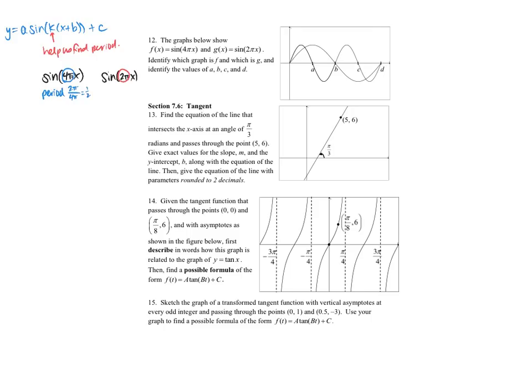And the period of this one is 2 pi over 2 pi, which is 1. So I can see that this one has a shorter period, so it's going to complete one period in one half of the time that this one completes a period. The larger that k is, the faster it's going to go.